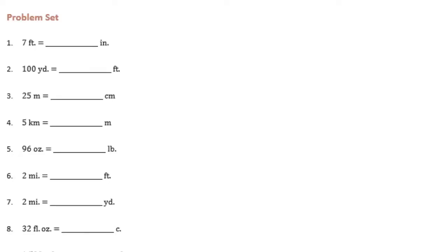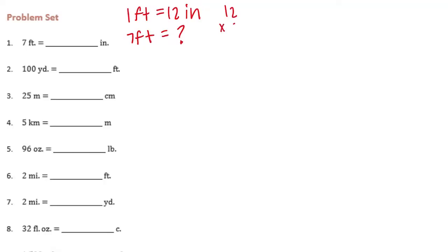So 7 feet is equal to how many inches? I know that 1 foot is equal to 12 inches, so we need to know how many inches 7 feet is. I'm going to multiply 7 times 12. 2 times 7 is 14, carry the 1, 1 times 7 is 7 plus 1 is 8.